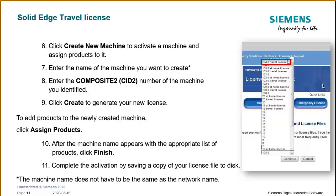The next step will ask you to create a new machine, activate it, and assign products to it. Enter the name of the machine — it doesn't have to match the network name. Enter the CID 2 number of the machine you identified, then click Create to generate your new license. To add products to the newly created machine, click Assign Products, and after the machine name appears with the appropriate list, click Finish. Finally, save the newly generated license to your hard drive — on the desktop or in a directory you can easily find.